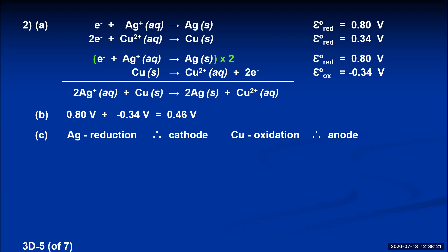Part D: do the electrons flow from silver to copper or from copper to silver? Looking at the two half reactions occurring — copper turns into copper 2+ ions and gives up two electrons, so electrons leave the copper and travel to the silver. The electrons flow from copper to silver through the external wire. For the line notation, write the anode first, then one line, then the anode solution, then two lines, then the cathode solution, then one line, then the cathode.